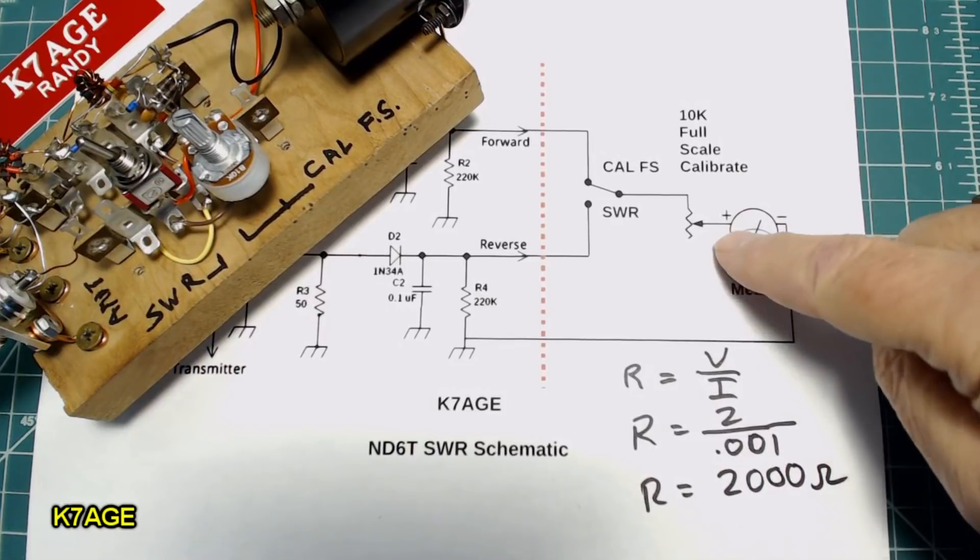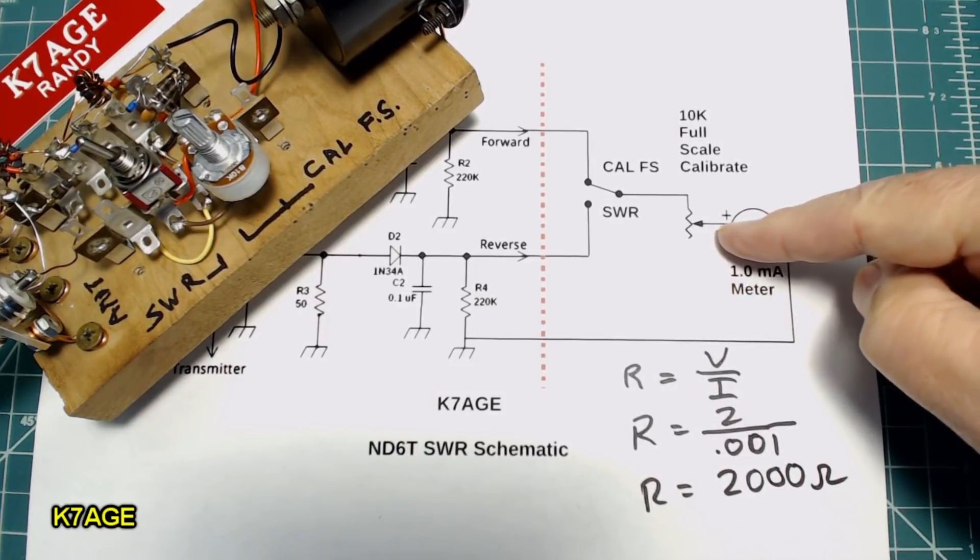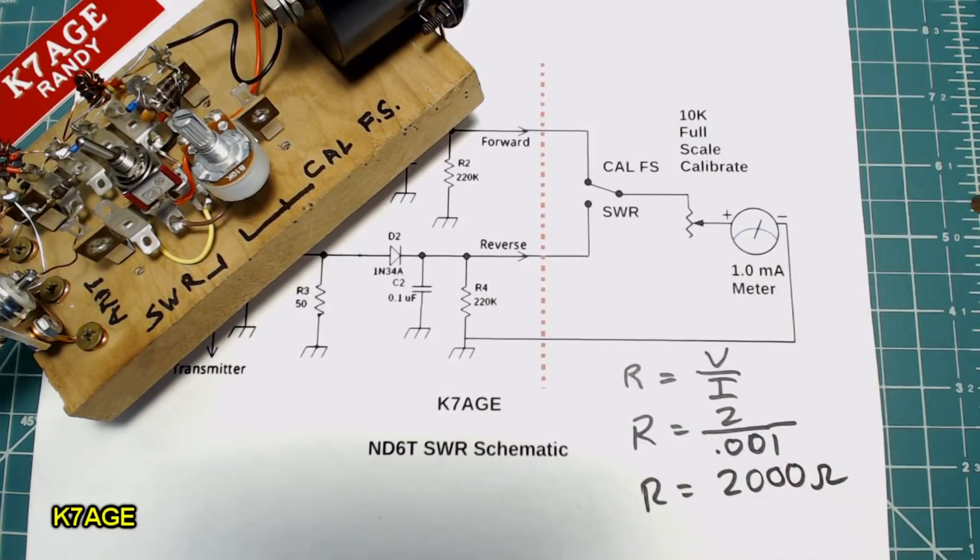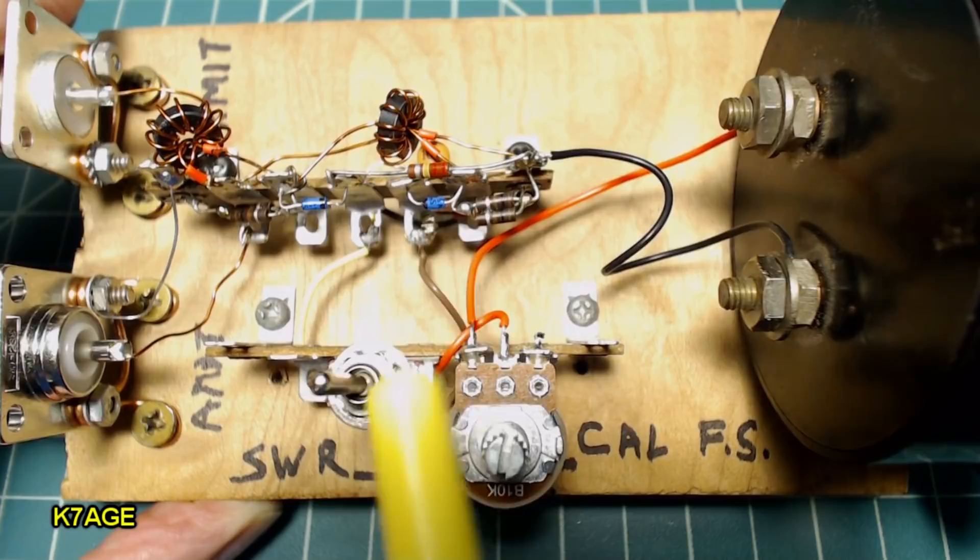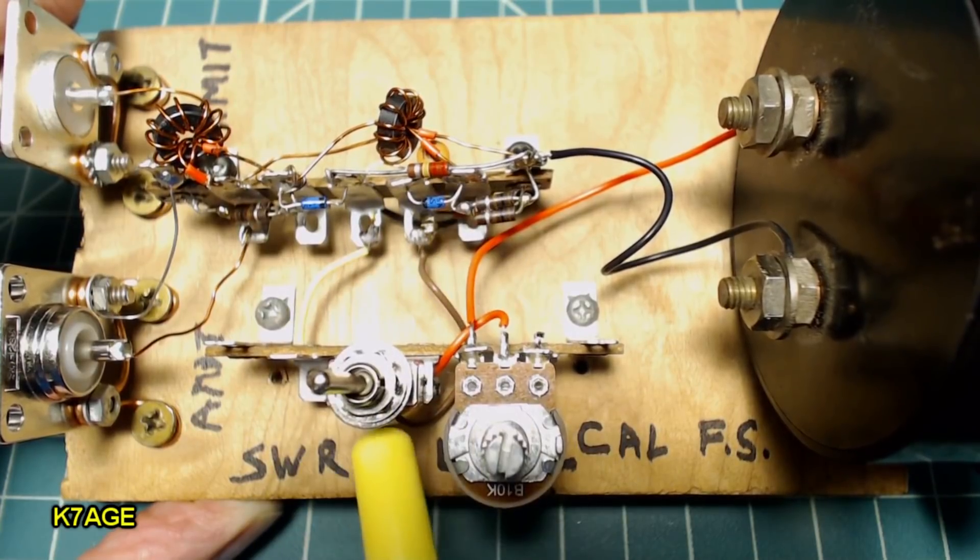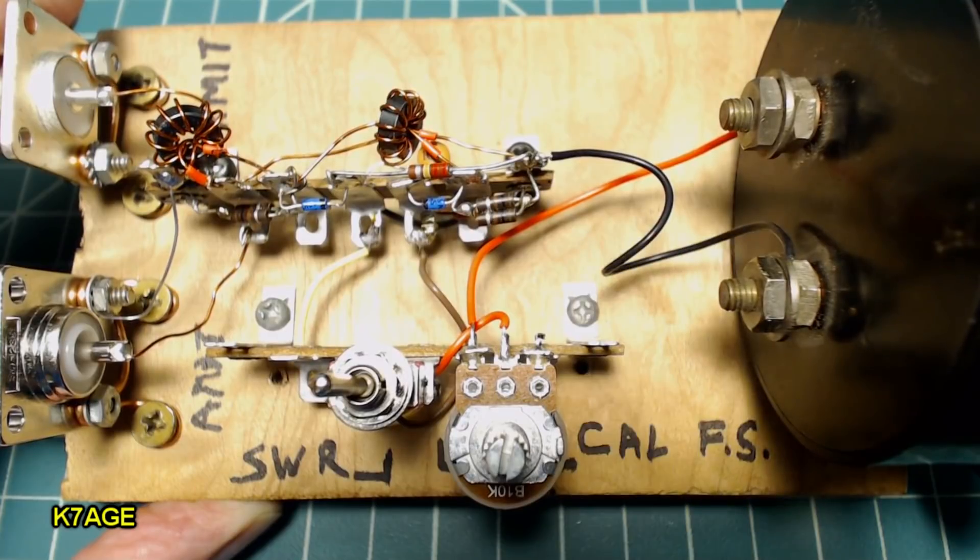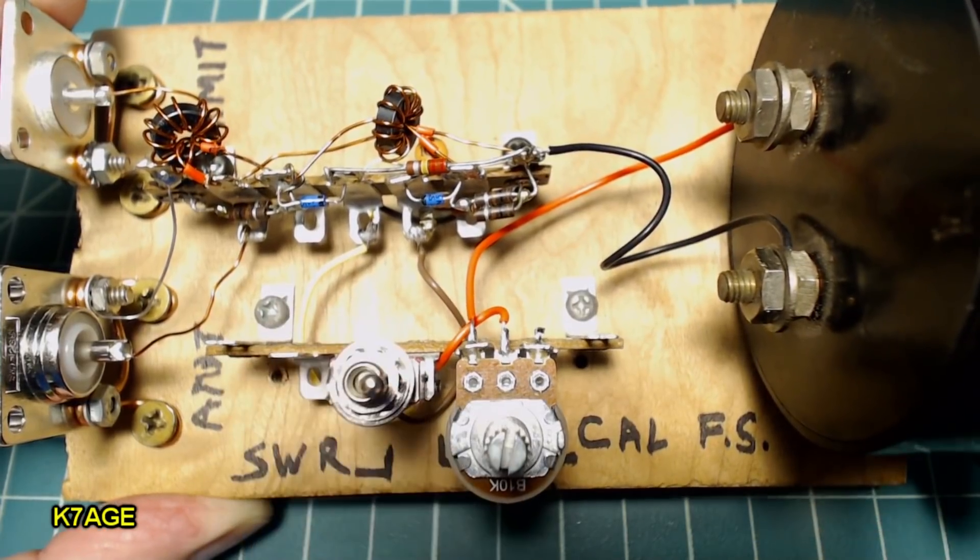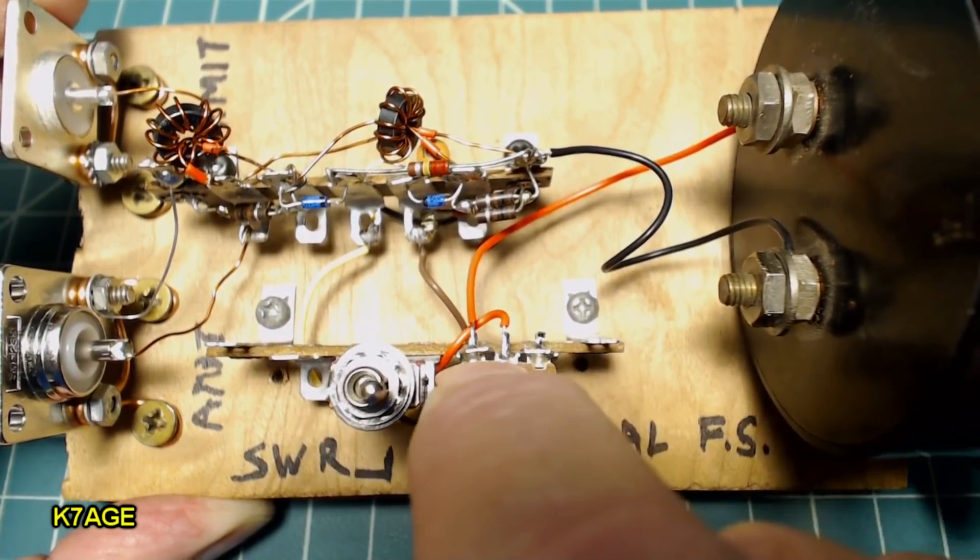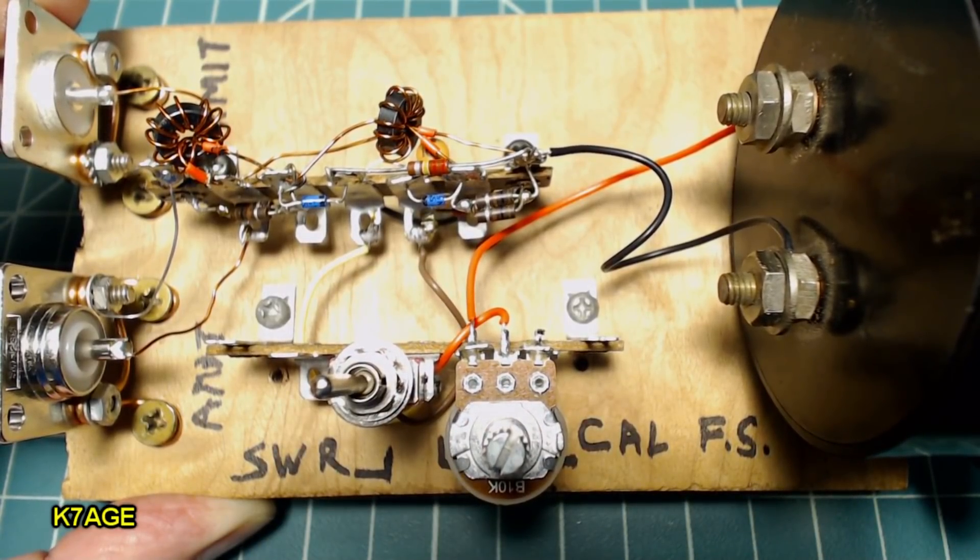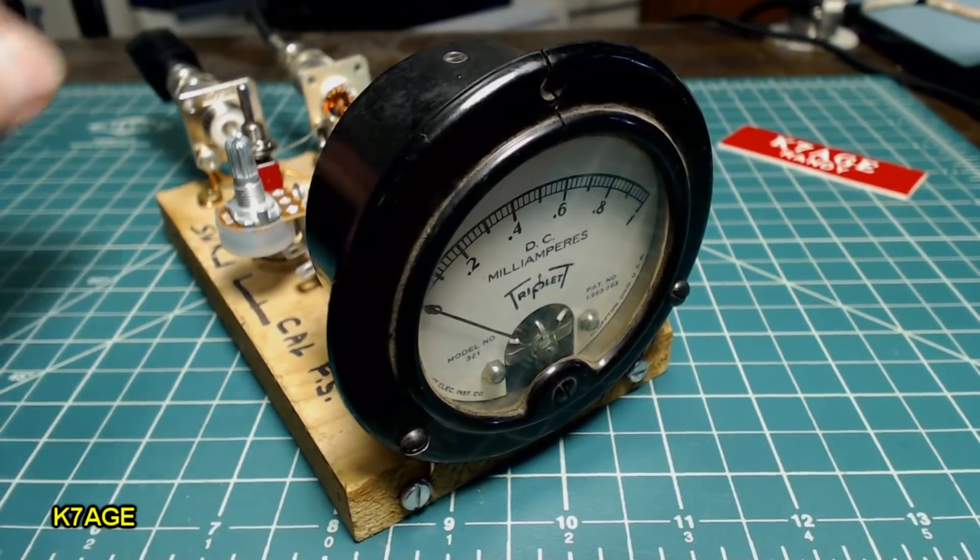So by using a 10k pot I have range for higher power and also in the QRP range I have enough range on the pot in order to set it. So here's the switch, it's connected to each diode. The center position goes through the pot to the plus terminal on the meter. Negative terminal goes to ground. If I move the switch to the right I can adjust the pot for full scale, move the switch to the left and get a meter reading to determine SWR. So let's see if this works.